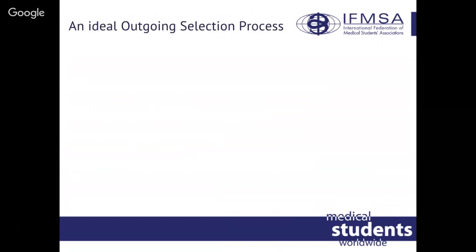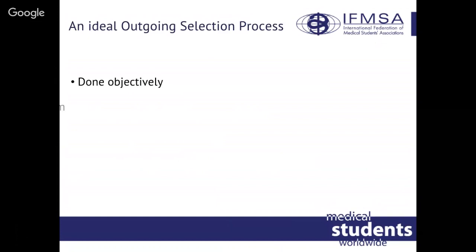What is an ideal outgoing selection process? It's a process done objectively, with set criteria, a clear assessment scale, and a scoring system ensuring all applicants go through the same standardized process. It is very important to have a clear timeline: promote your exchanges at the beginning, send out a call open for a considerable amount of time, make it available to as many NMO members as possible, and give out results in time so you don't miss sending early applications.